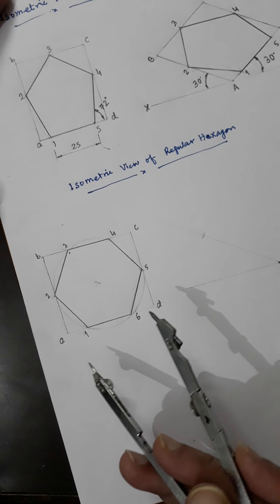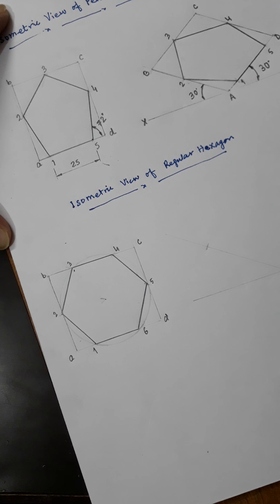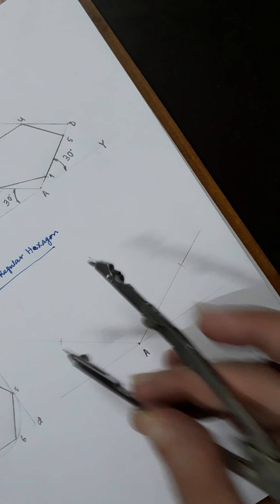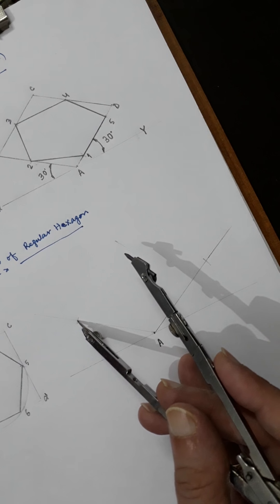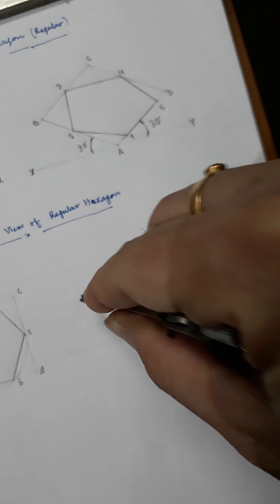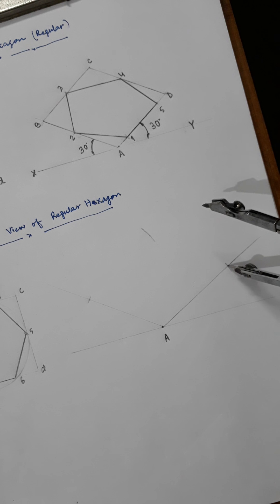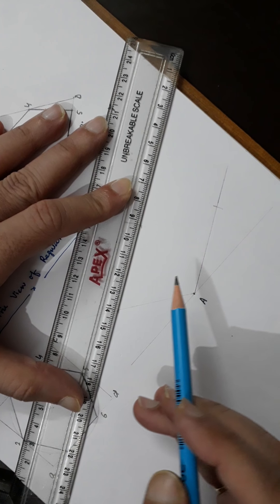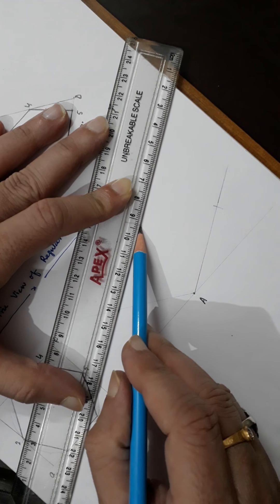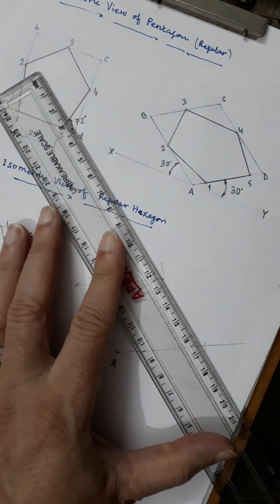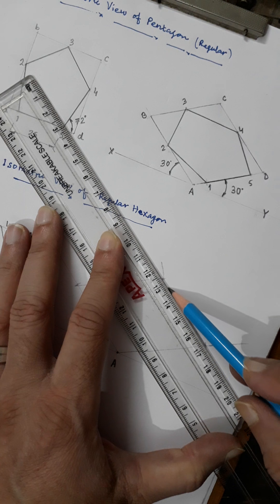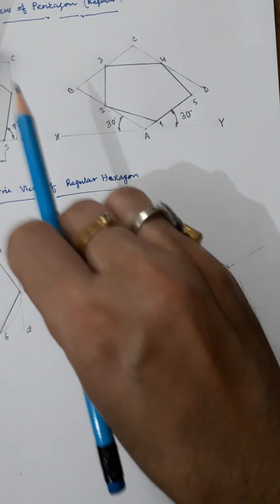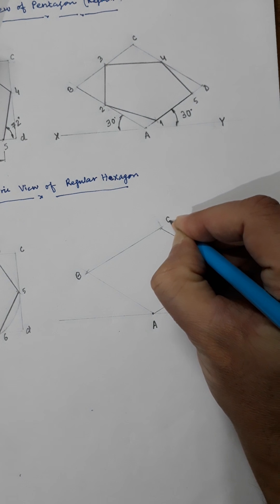And then you can take this length — it will be the same because it is a rectangle. Now draw these construction lines; these lines are continuous thin lines. Whenever you draw the hexagon, it will be thick. This is similar to the isometric view of the rectangle we did previously — A, B, C, D. So this is B, this is C, and this is D.